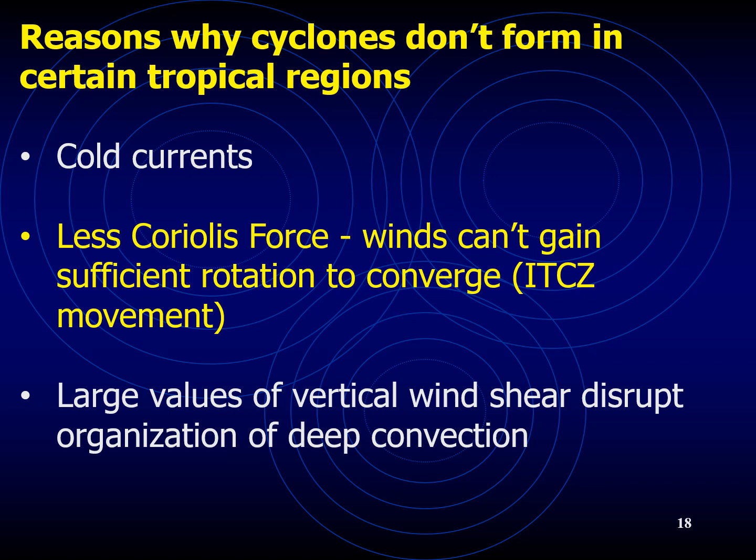A tropical cyclone cannot sustain in cold water, or where there is insufficient Coriolis force for winds to get sufficient rotation to converge in the ITCZ. Large values of vertical wind shear disrupt the organization of the thunderstorms, not allowing them to form an organized circulation and breaking it apart before it can convert into a hurricane.